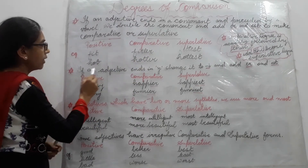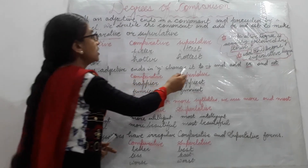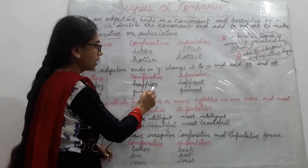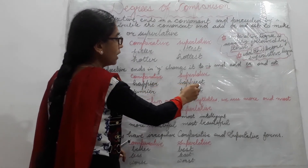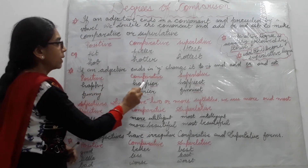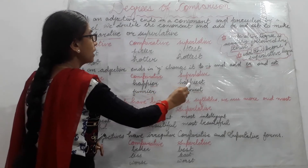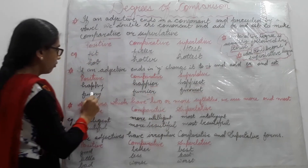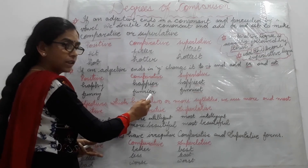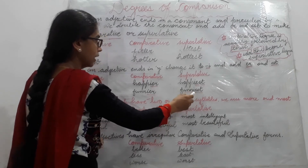Next rule: if an adjective ends in -y, agar kisi adjective ke end mein 'y' aata hai, change it to 'i'. Y ko 'i' mein change karenge aur comparative banane ke liye -er lagaenge, aur superlative banane ke liye -est. For example, 'happy' — ends in 'y', toh 'y' hata ke 'i' aur -er lagaya: 'happier'. Superlative: 'happiest'. Similarly, 'funny' — 'y' hata ke 'i' lagaya: 'funnier', 'funniest'.